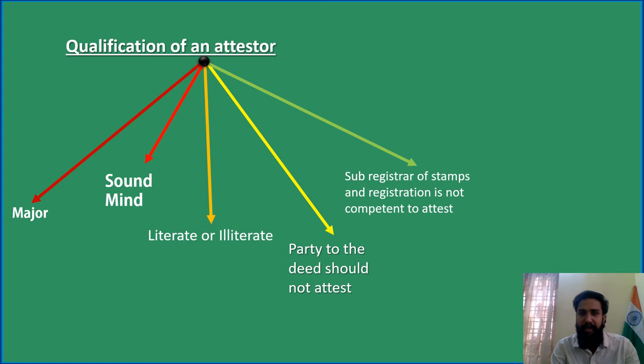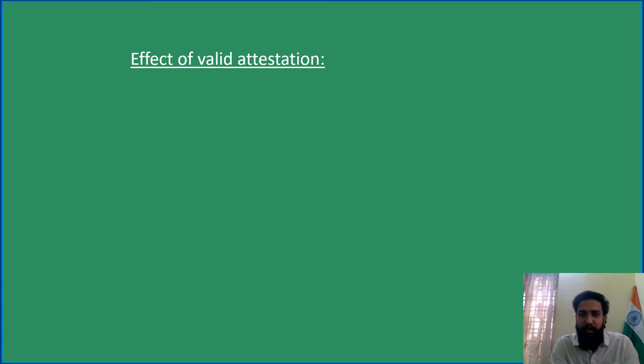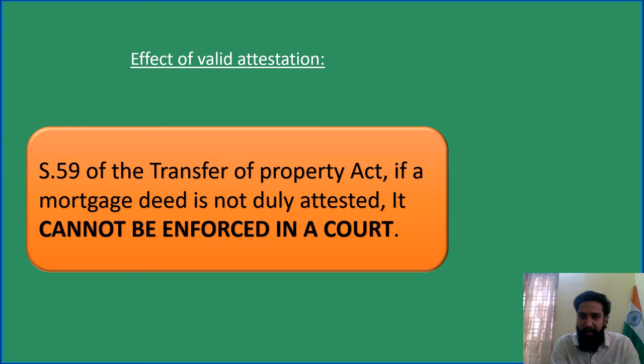And the sub-registrar of stamps and registration is not competent to attest — it is a government body and they also should not attest the registration process. Regarding valid attestation, Section 59 of the Transfer of Property Act says: if a mortgage deed is not duly attested, it cannot be enforced in a court.